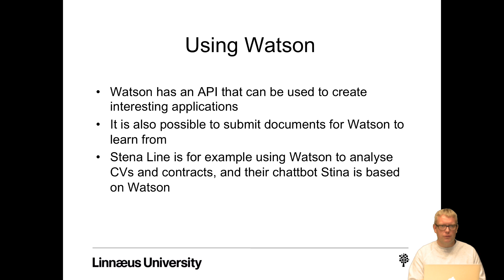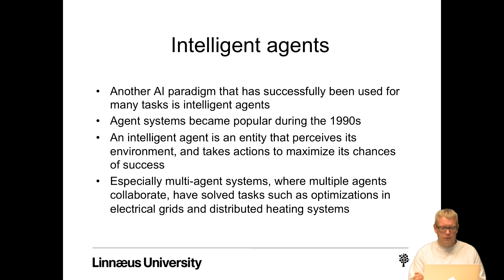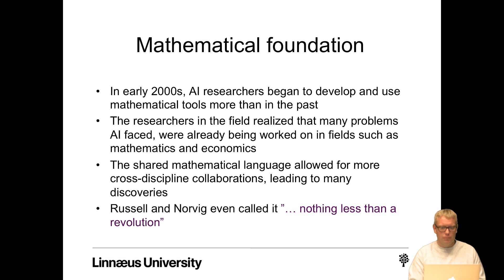Another AI paradigm that has successfully been used for many tasks is intelligent agents. Agent systems became popular during the 1990s. An intelligent agent is a small entity that perceives its environment and takes actions to maximize its chances of success. A single agent itself is not very smart or complex, but in multi-agent systems where multiple agents collaborate, they can solve important tasks such as optimizations in electrical grids and distributed heating systems.